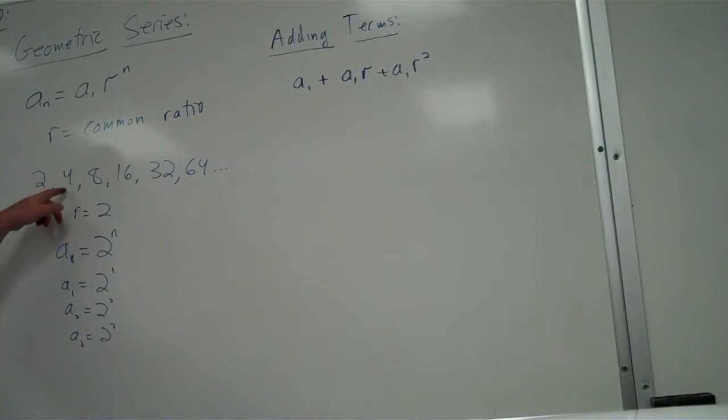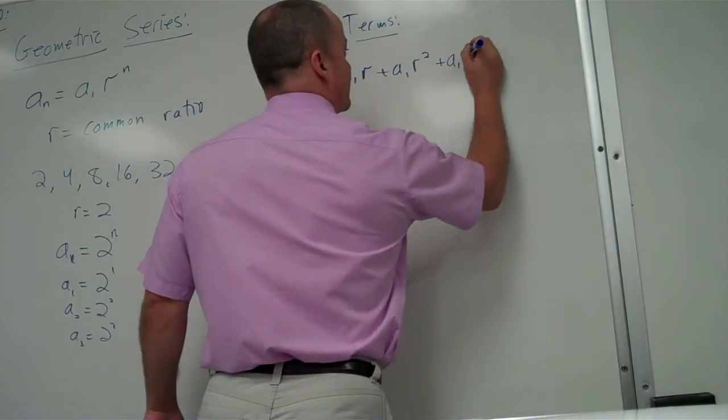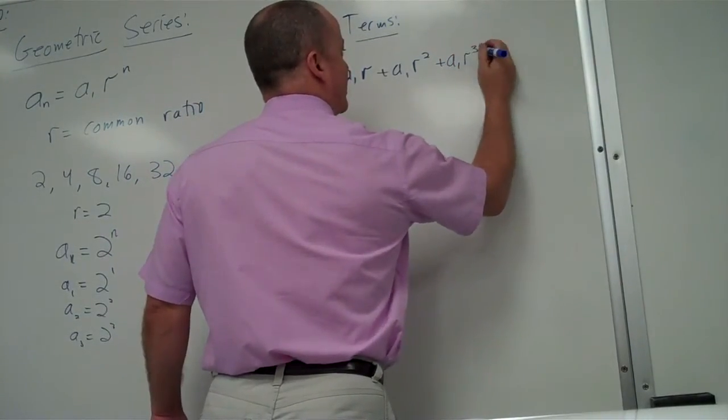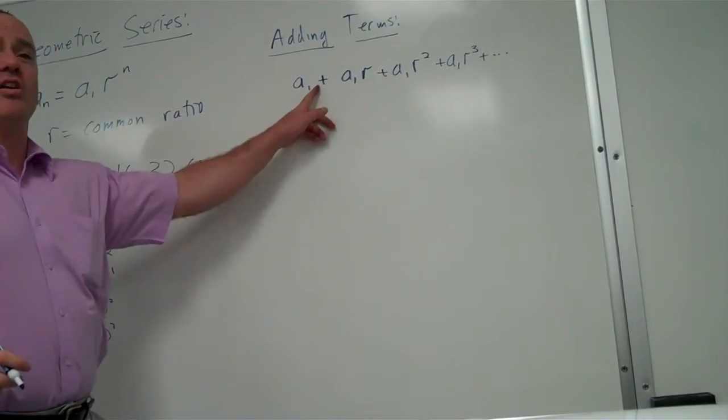Your third term is going to be your first term multiplied by the common ratio twice. Like over here, one way to look at 8 is it's what you get when you multiply 2 times 2 times 2. Yeah. Your next term after that is going to be r cubed. And it's going to keep following this pattern.